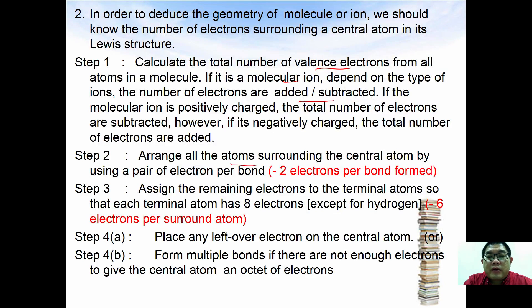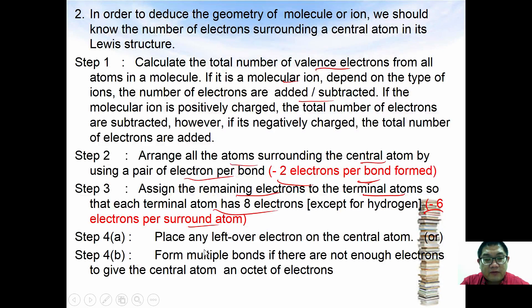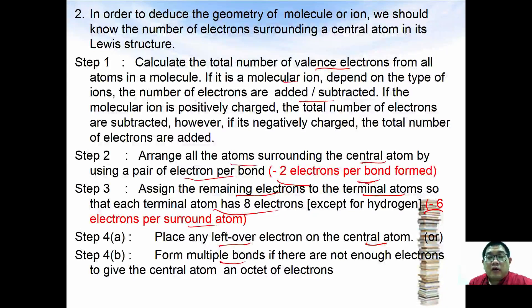Step 2: arrange all atoms surrounding the center atom using one pair of electrons per bond, then subtract this from the total calculated in step 1 — that is 2 electrons per bond formed. Step 3: assign the remaining electrons to the terminal atoms so each terminal atom has 8 electrons, placing 6 electrons per surrounding atom. Step 4: if there are leftover electrons, place them at the center atom; or if the center atom has not yet achieved octet, form a multiple bond to achieve the octet state.